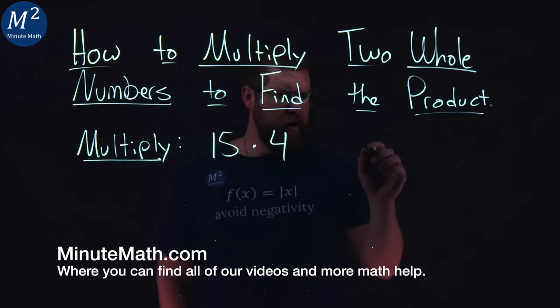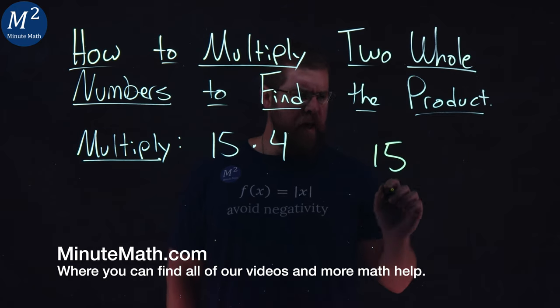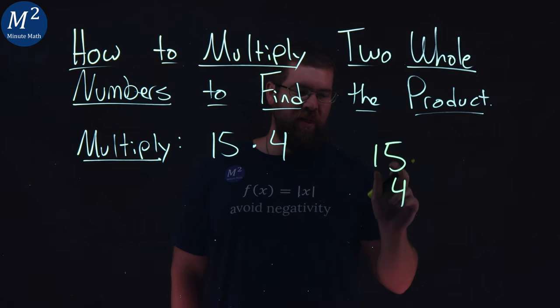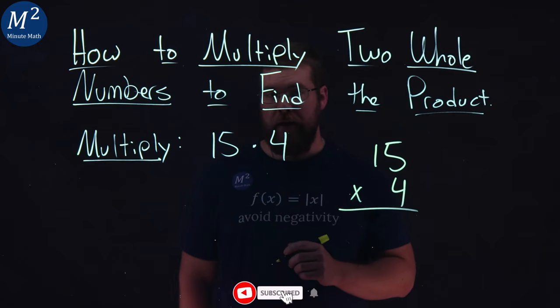Using the traditional method, I'm going to take 15 here and underneath put a 4 where the ones place is and we're going to multiply that.